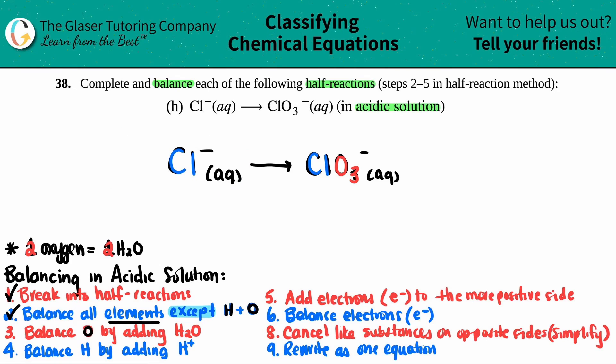So three oxygens on this side. No oxygens on this side. If you need a number, that's the number of H2Os that you need to add. So I need three oxygens. So I will add three H2Os. And that step is done. We balance the oxygen.